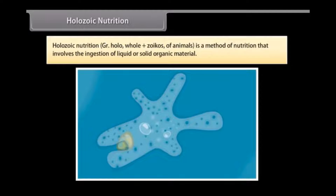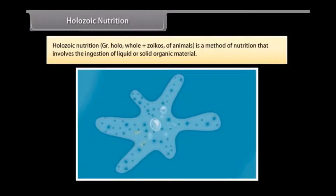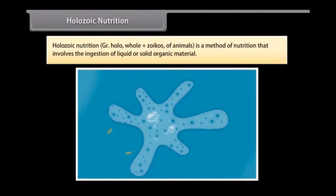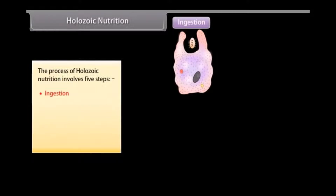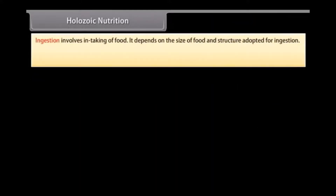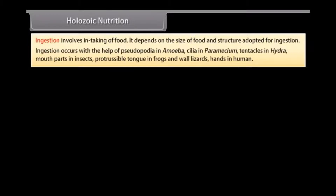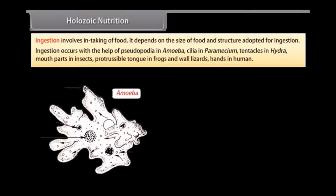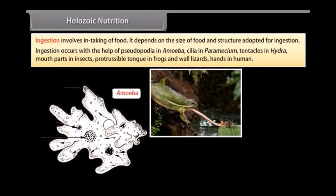Holozoic Nutrition: 'Holo' means whole and 'zoicos' means animals. It is a method of nutrition that involves the ingestion of liquid or solid organic material. The process involves five steps: ingestion, digestion, absorption, assimilation, and egestion. Ingestion involves the intake of food and depends on the size of food and the structure adopted for ingestion. It occurs with the help of pseudopodia in amoeba, cilia in paramecium, tentacles in hydra, mouthparts in insects, protrusible tongue in frogs and wall lizards, and hands in humans.